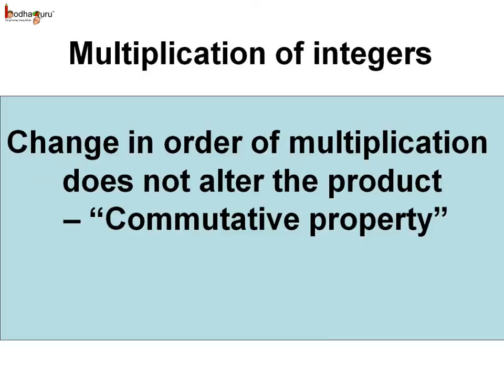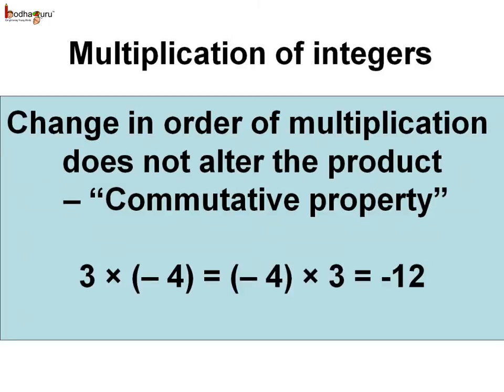So what do we see? We see that the commutative property of multiplication holds true, which says that while multiplying two integers, the order of multiplication does not alter the product. So 3 multiplied by minus 4 is the same as minus 4 multiplied by 3, which is equal to minus 12.